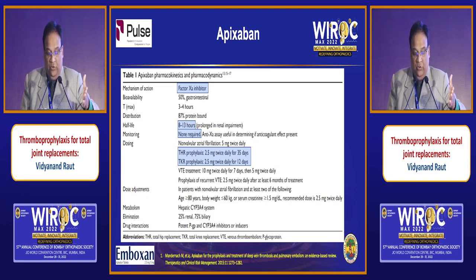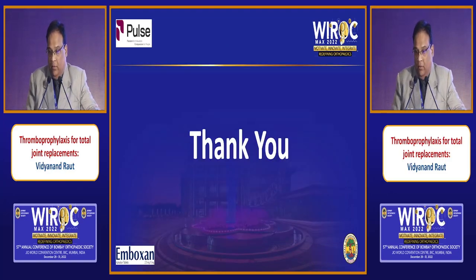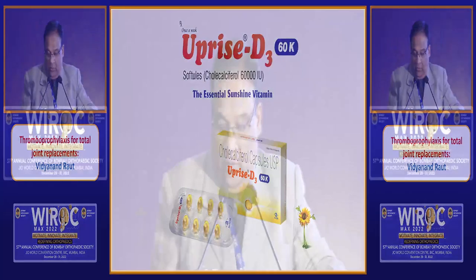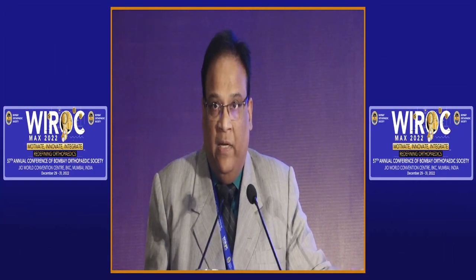Adverse effects are minor — occasional bleeding, very rare nausea, GI bleeding manageable with PPIs. Dosage for VTE prophylaxis in THR: 2.5 mg twice daily for 35 days; for TKR: 2.5 mg twice daily for 12 days. Salient points: Factor Xa inhibitor, 12-hour half-life, no lab monitoring required, easy dosage regimen. Thank you — happy to answer questions.